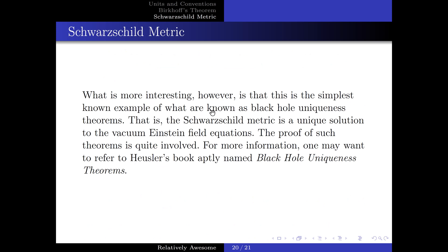The Schwarzschild metric is a unique solution to the vacuum Einstein field equations. The proof of such theorems is quite involved, and for more information one might refer to Heusler's book aptly named Black Hole Uniqueness Theorems.